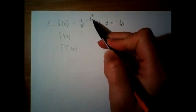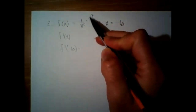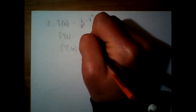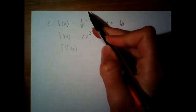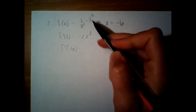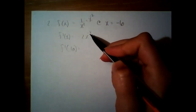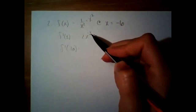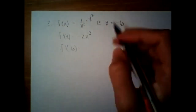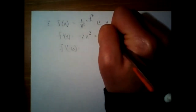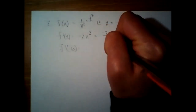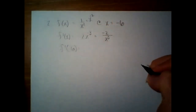When we do the power rule, we're going to bring the negative two down and subtract one from the exponent. Just be careful when it's negative — when you subtract one, it becomes more negative. Then I'm going to rewrite that as negative two over x cubed.